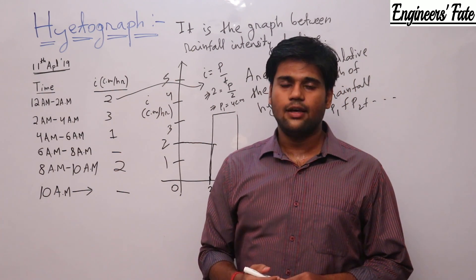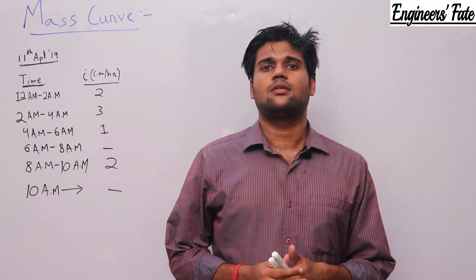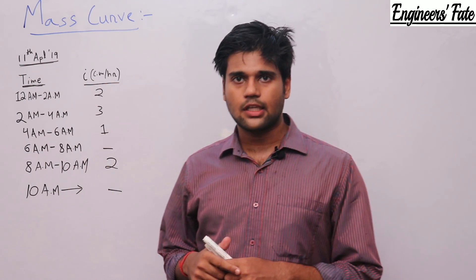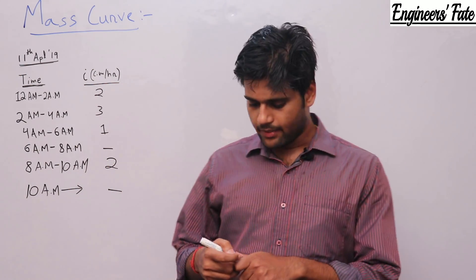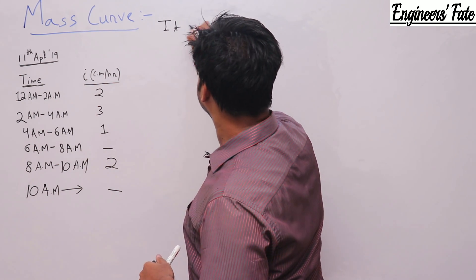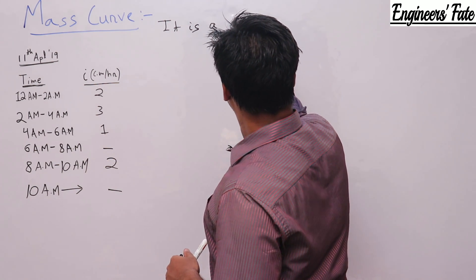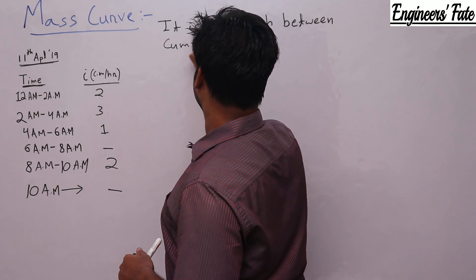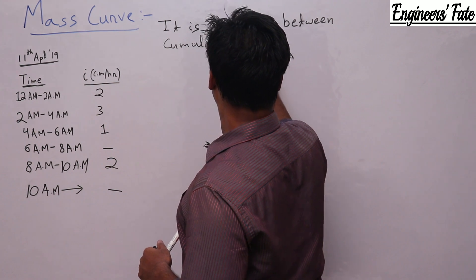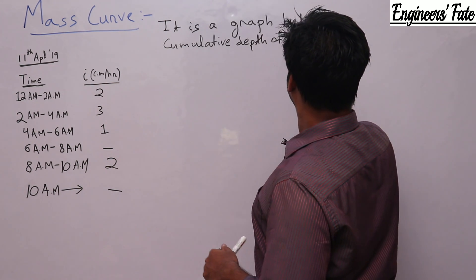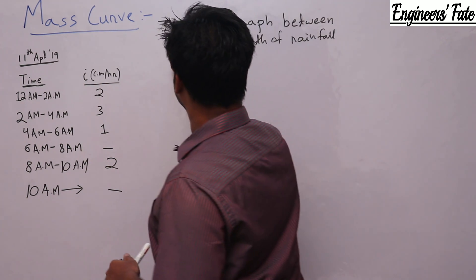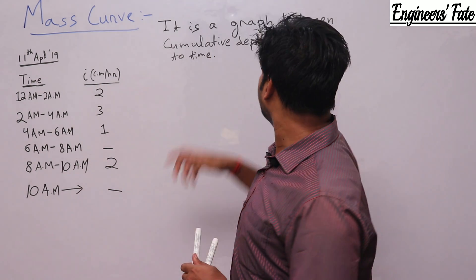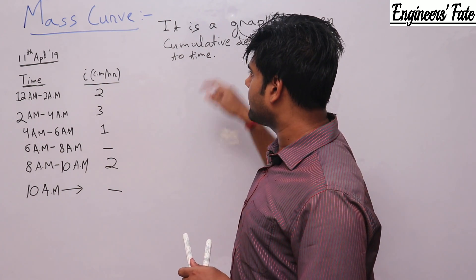Now let's move to mass curve. A mass curve is a graph between cumulative depth of rainfall and time.